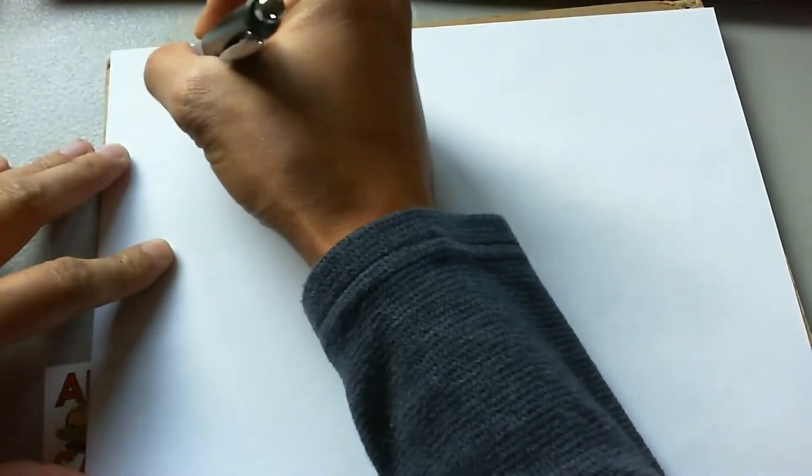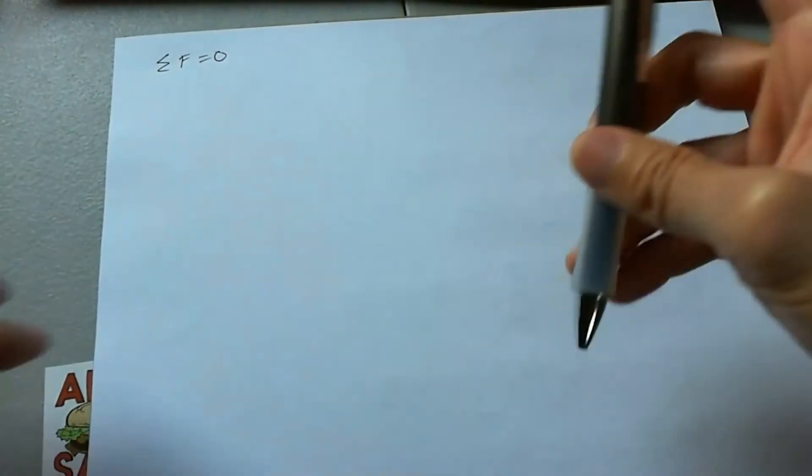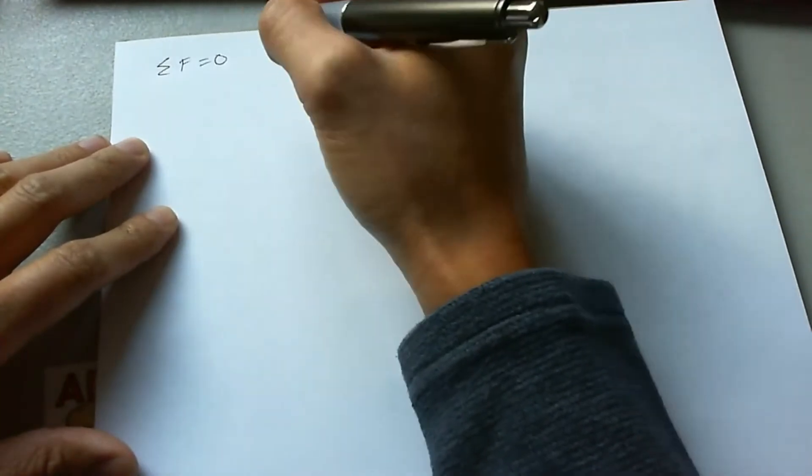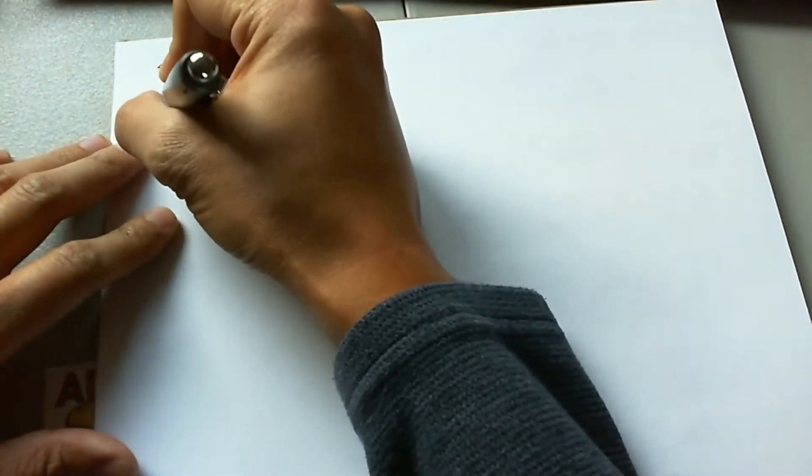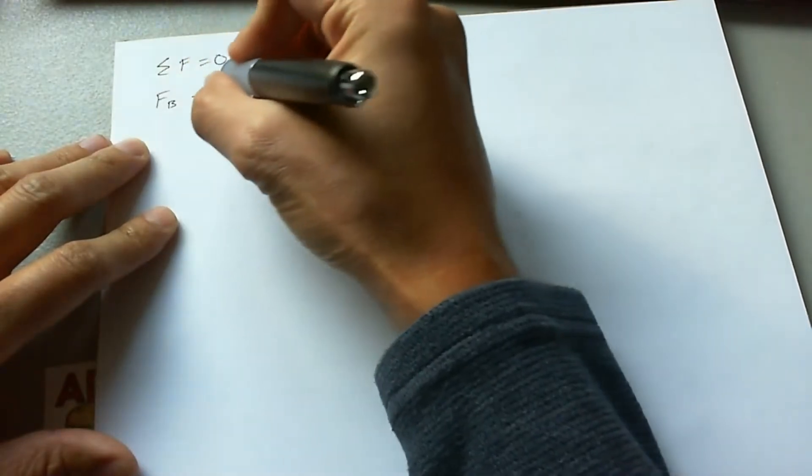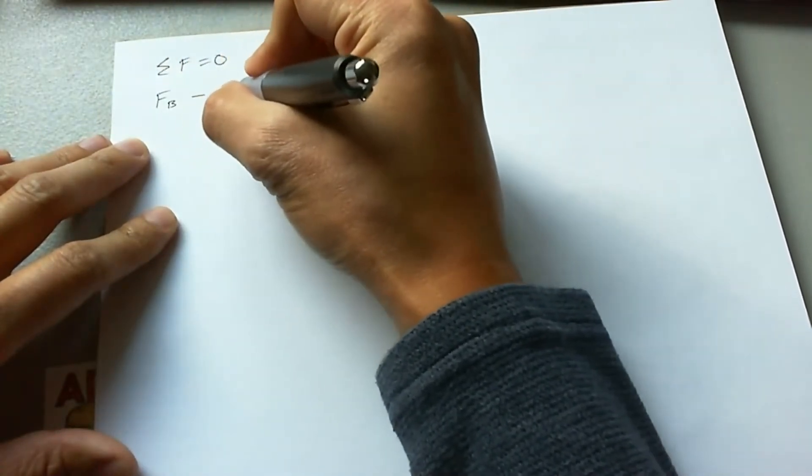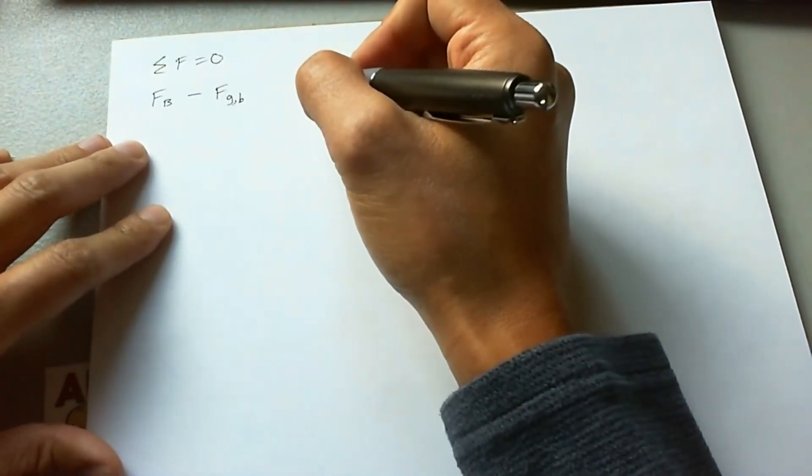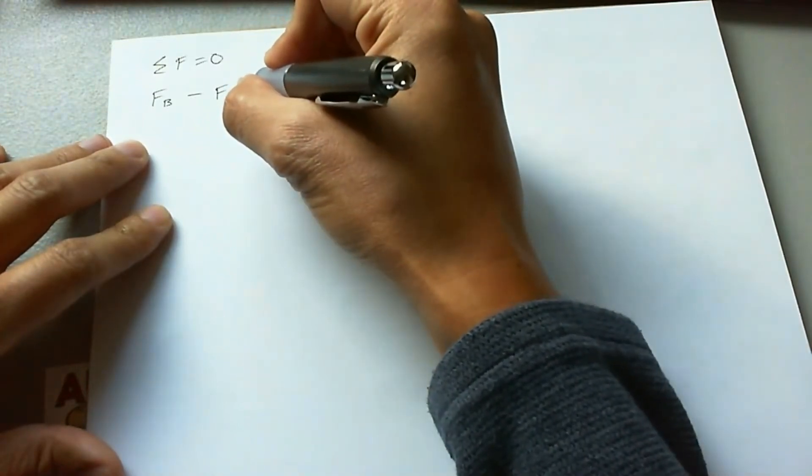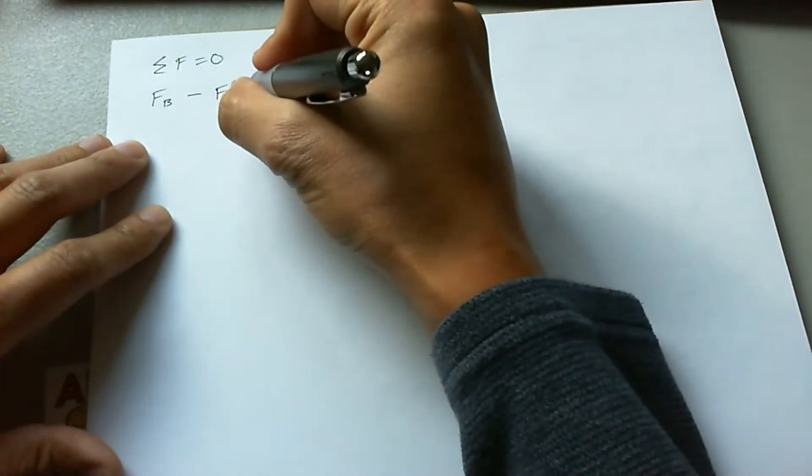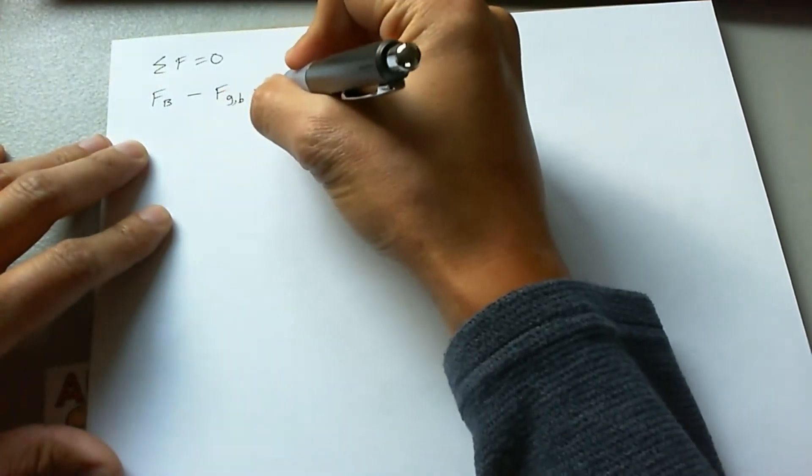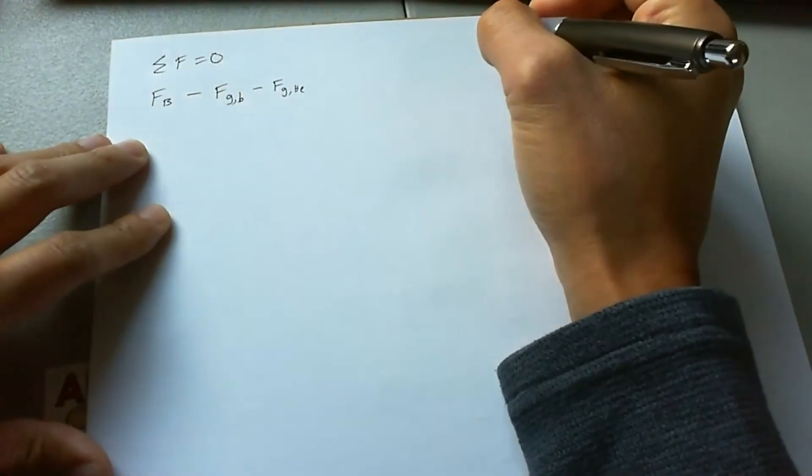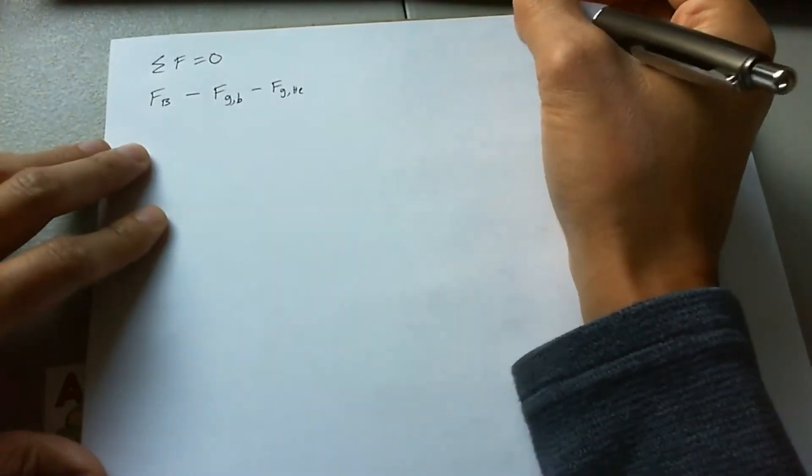So what I'm going to do is I'm going to go ahead and say net force is equal to zero. And so therefore, we can say the force that's pushing the balloon up is buoyant force. The force that is pulling the balloon down is going to be the gravitational weight or the gravitational force of the balloon. And we can't discount the fact that helium itself has a little bit of weight. So we're going to take the weight of the load and the weight of the helium as two separate terms that pushes the balloon downward.